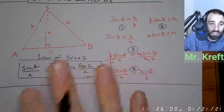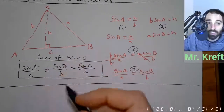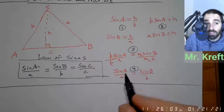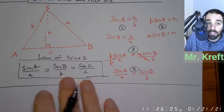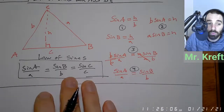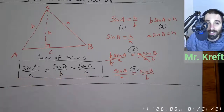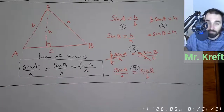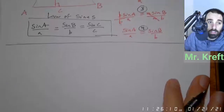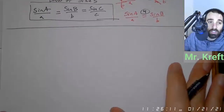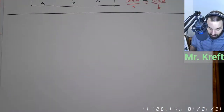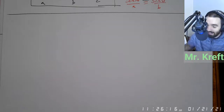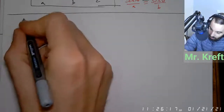Hopefully this makes sense, guys. This is the derivation of law of sines. I just did angles A and B, but with equals you would only choose two of these at a time. So what we're going to talk about today is the ambiguous case of ASS.